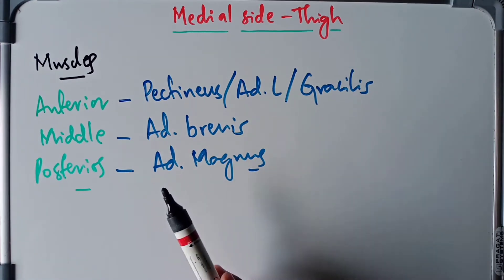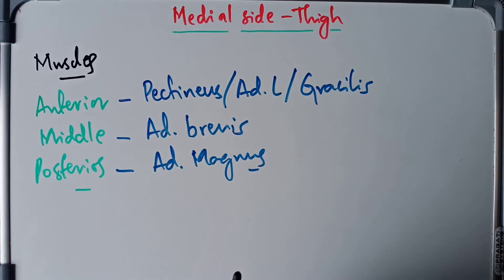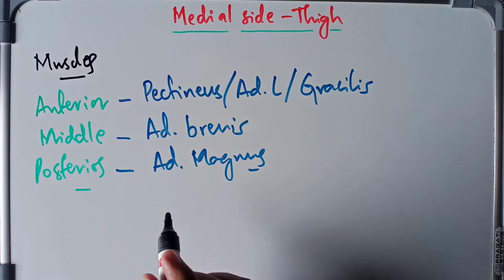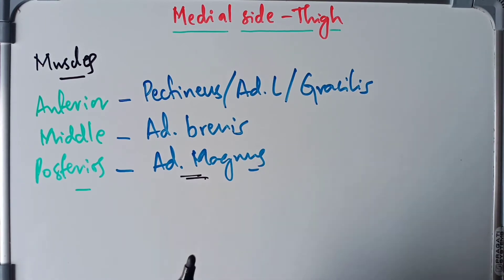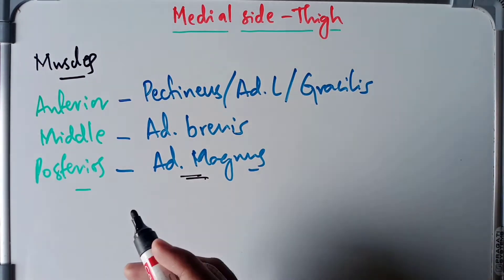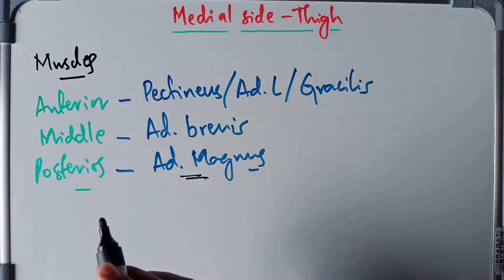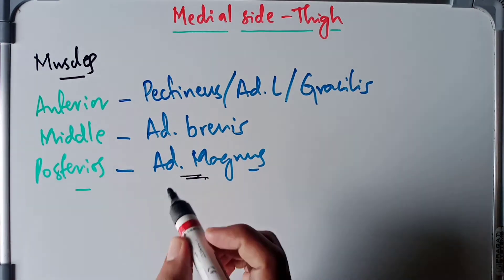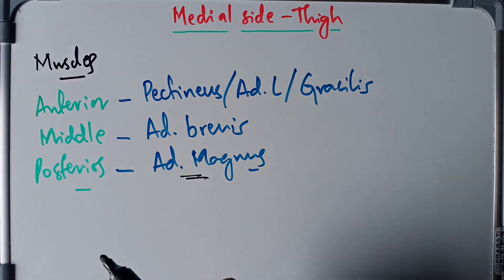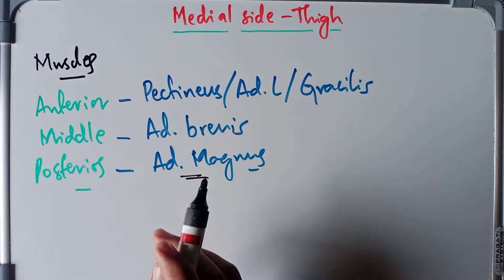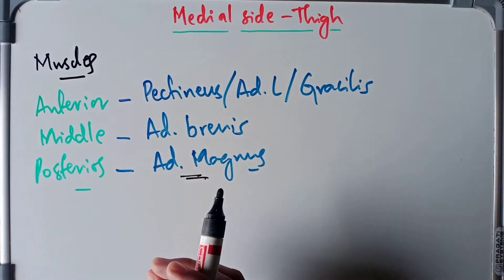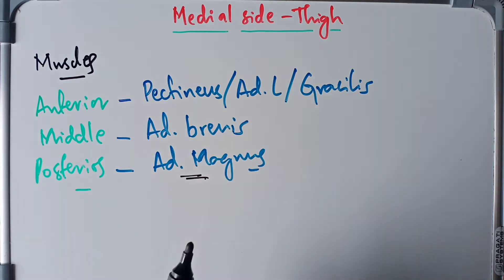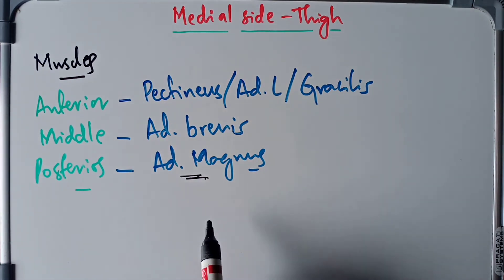All the muscles of the adductor compartment are supplied by the obturator nerve, except the hamstring part of adductor magnus and part of pectineus. Adductor magnus has both a hamstring part and an adductor part. Pectineus and adductor magnus are called composite muscles because of their dual innervations. Pectineus is supplied by both the femoral nerve and the obturator nerve, while adductor magnus is supplied by both the obturator nerve and the tibial part of the sciatic nerve.